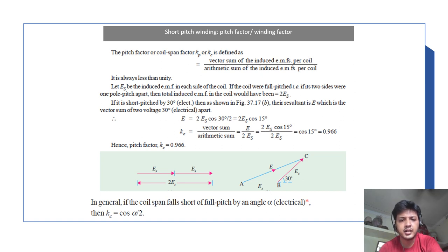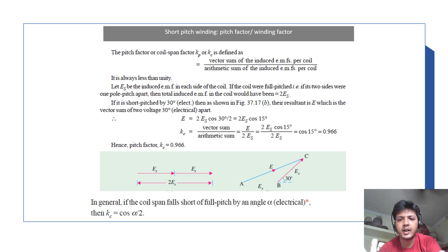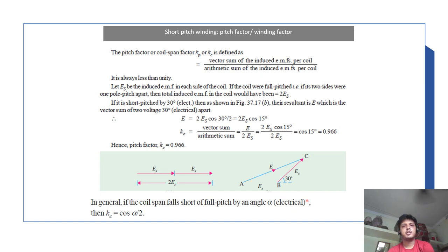In general, if the coil span falls short of full pitch by angle α, then Kc = cos(α/2). That is the pitch factor or coil span factor.